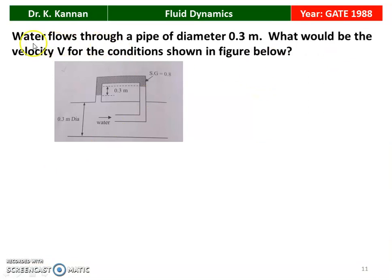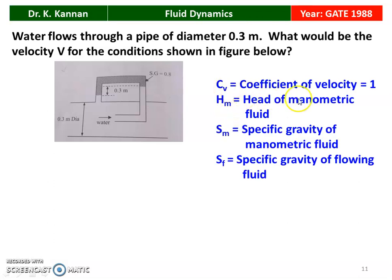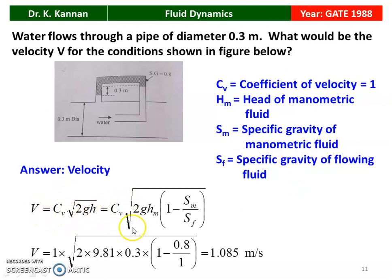Next question from the 1988 question paper: water flows through a pipeline of diameter 0.3 m. What would be the velocity V for the condition shown? Diameter equals 0.3 m, head difference equals 0.3 m, specific gravity of the manometric fluid is 0.8. Velocity V equals Cv × √(2G·HM × (SM/SF − 1)). With g = 9.81, HM = 0.3, SM = 0.8, SF = 1, the velocity equals 1.085 m/s.